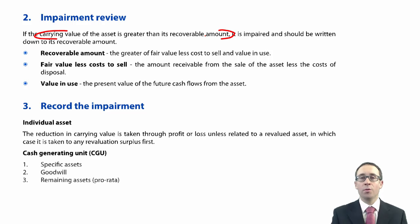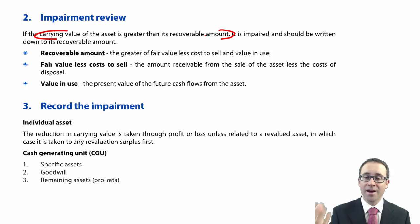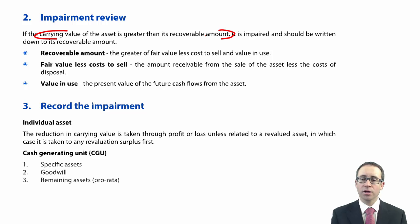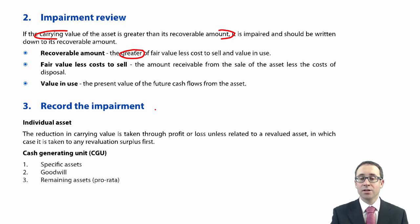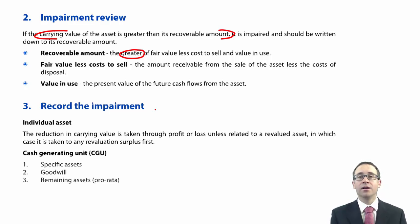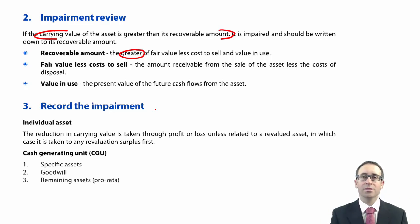We also looked at this with an associate, where the carrying value is the investment in associate and we compare that to the recoverable amount of our share of the associate. The recoverable amount reflects the best use of the asset — we compare the fair value less cost to sell, if we were deciding to sell it, or the value in use, which is the discounted future cash flows discounted back at an appropriate discount rate over a period not exceeding five years.